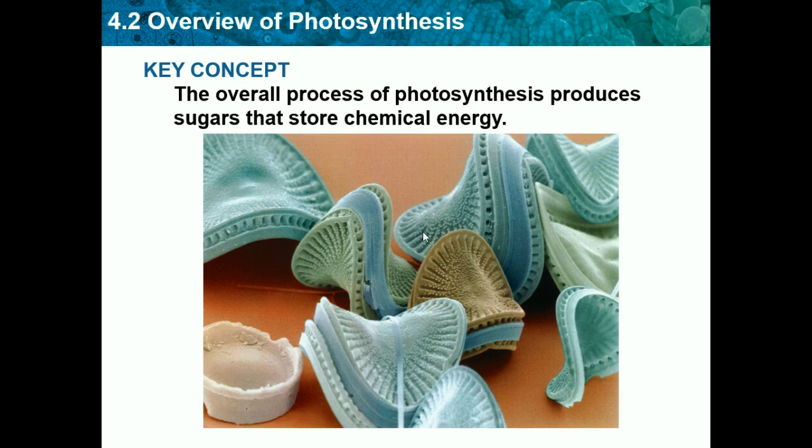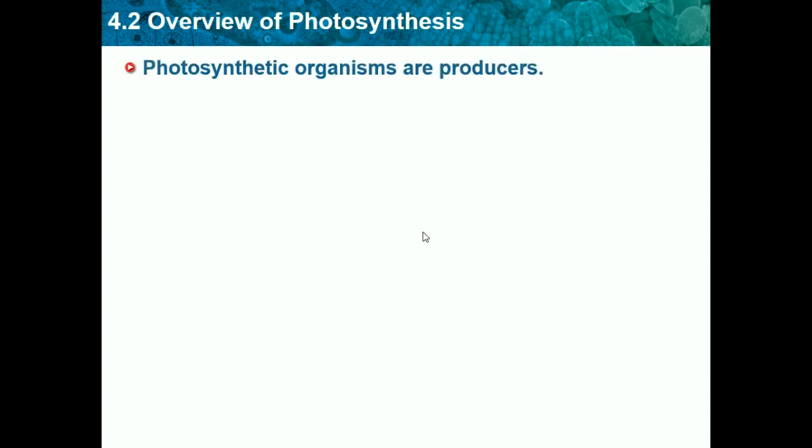Our key concept for today is the overall process of photosynthesis produces sugars that store chemical energy. Plants do photosynthesis to produce food for themselves — they don't eat anything, they just produce their own food. Photosynthetic organisms are producers, meaning they produce their own food and don't eat off other organisms.